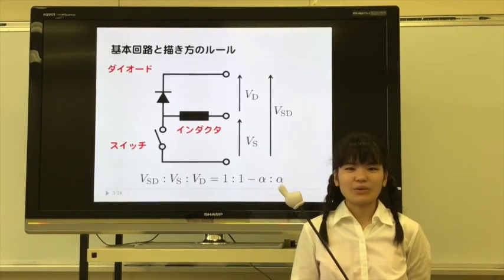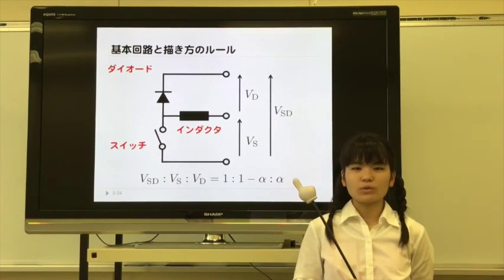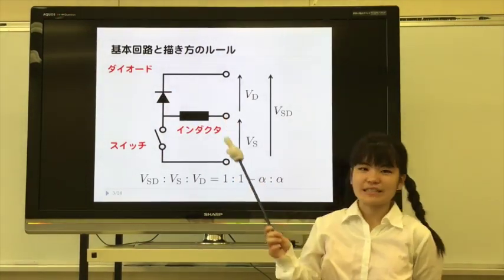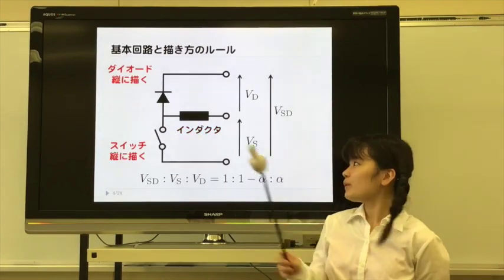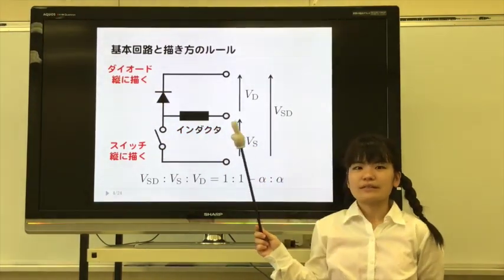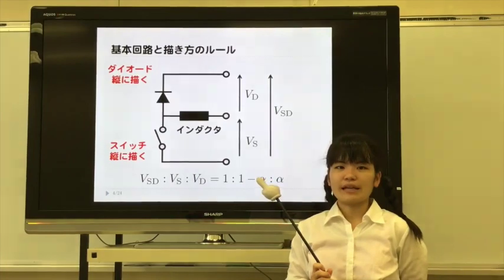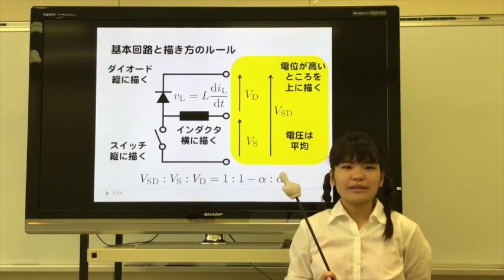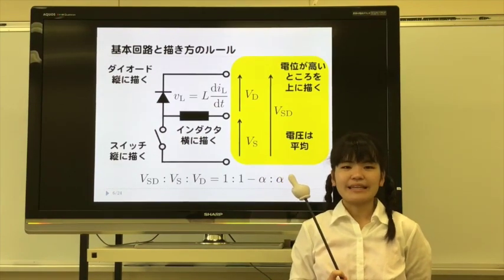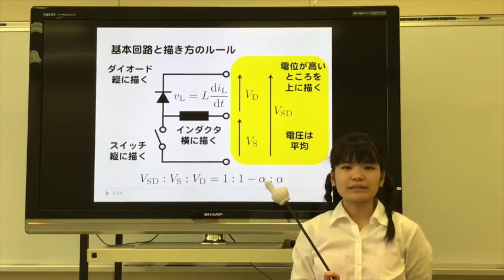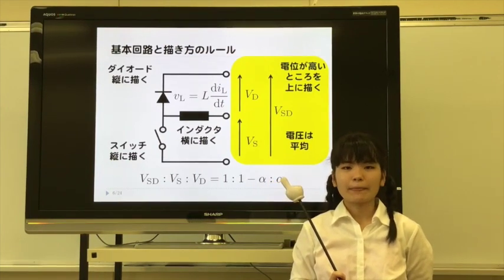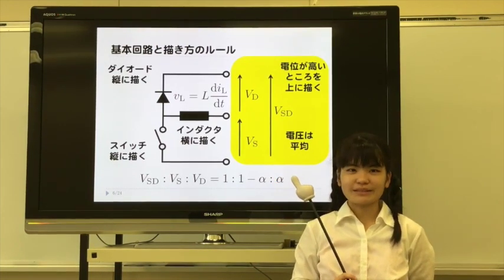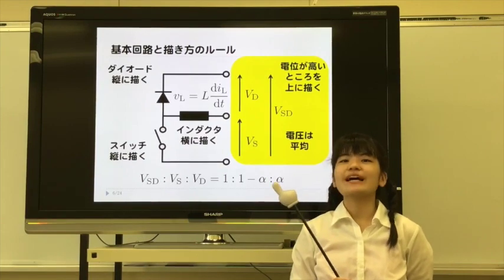I'll show you how to draw the basic circuit and its rules for the common equivalent circuit. The basic circuit consists of a diode, switch, and inductor. The diode and the switch are arranged in vertical direction. The inductor, which connects with the diode and the switch, is arranged in horizontal direction. The reason we draw it this way is because we want to put high voltage potential at a high point. We assume that the inductor current is continuous every switching period. In this case, the average of the inductor voltage becomes zero. Thus, we draw the inductor in horizontal direction.